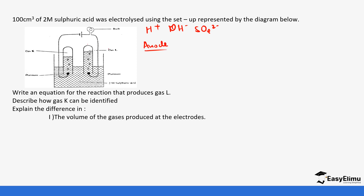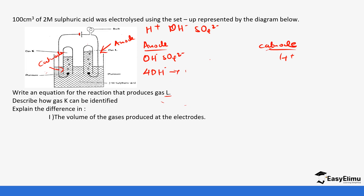At the anode, connected to the positive terminal, the anions — hydroxyl ions and sulfate ions — migrate to it. At the cathode, connected to the negative terminal, we have the hydrogen ions. To write the equation for the reaction that produces gas L, we have the oxygen gas equation: four hydroxyl ions discharge to give two molecules of water plus oxygen gas plus four electrons. Gas K is produced at the cathode: four hydrogen ions gain four electrons to form two molecules of hydrogen gas.